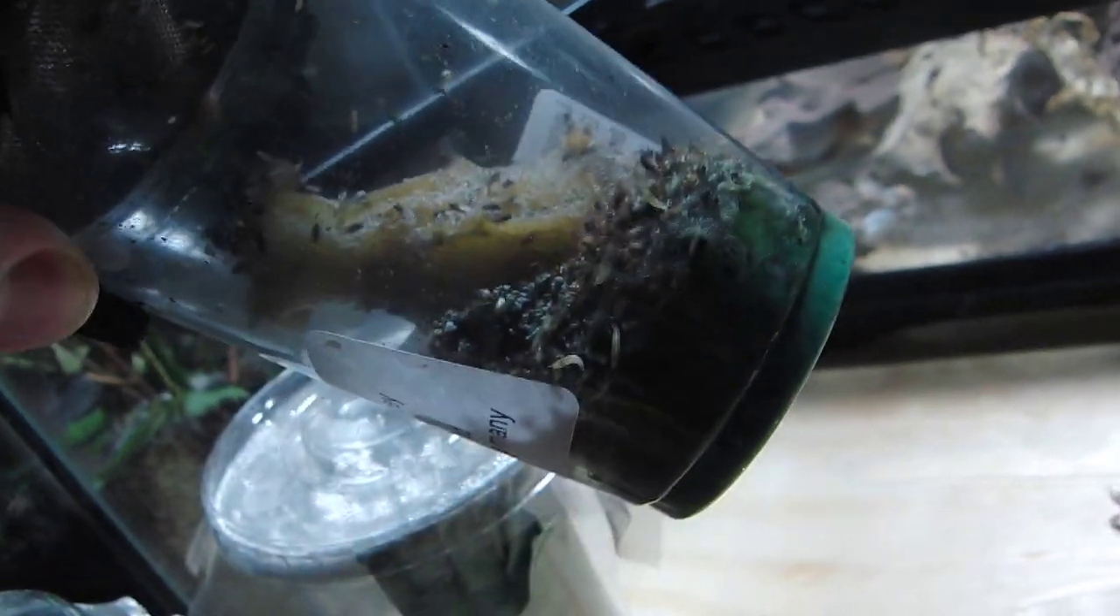But so easy to keep. I mean look, I just chuck rotten fruit in there and that usually keeps them going. But you can get special cultures, a culture medium which the larvae live on and breed on. Hydei are the bigger ones. Melanogaster are small, tiny. Like the smallest species of mantis will only take melanogaster or even springtails.